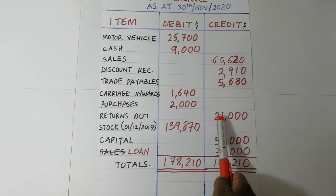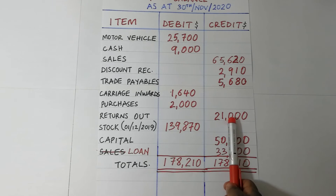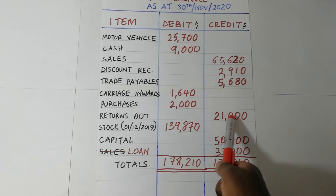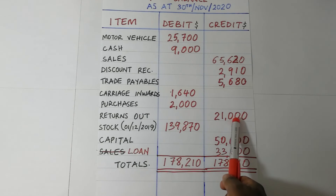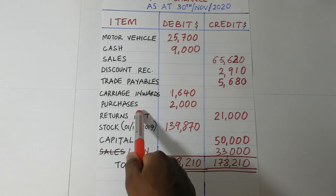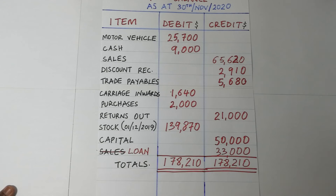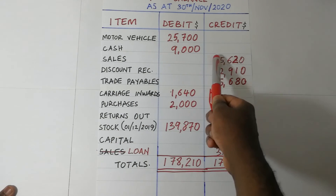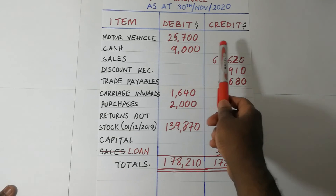Returns outwards is the reverse of purchases — you are returning goods to your suppliers. Because purchases is a debit balance, returns outwards, also called purchase returns, will be a credit balance. On the other hand, returns inwards are what we call sales returns — customers returning goods they had earlier purchased. Returns inwards is a reverse of sales, so if sales have a credit balance, returns inwards will have a debit balance.